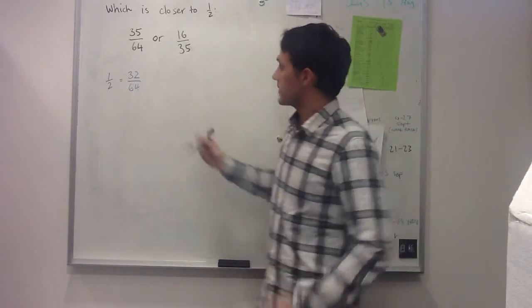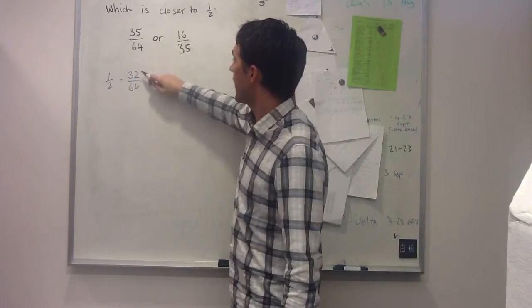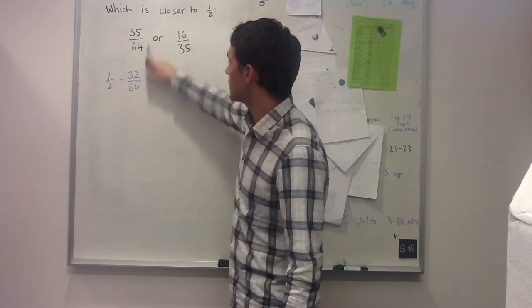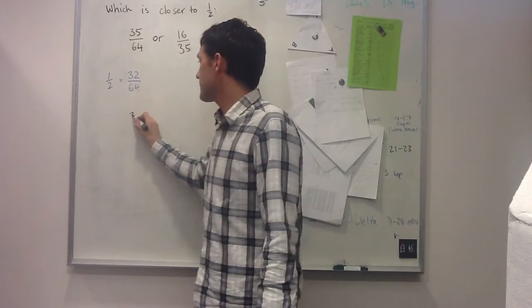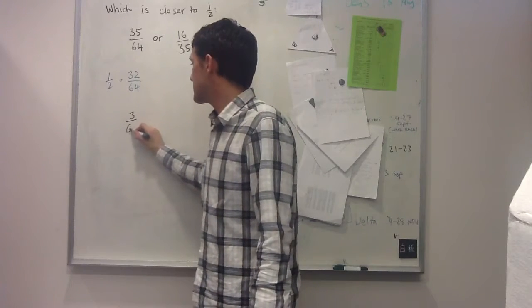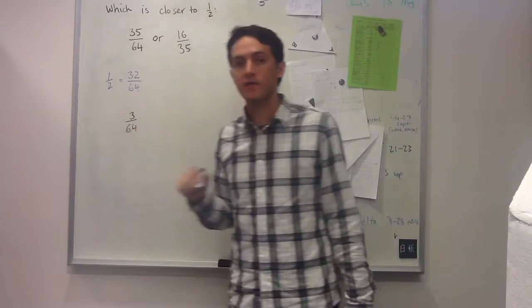From this I can straight away see that if I do the subtraction here, 35 minus 32, that 35/64 is exactly 3/64 away from a half.